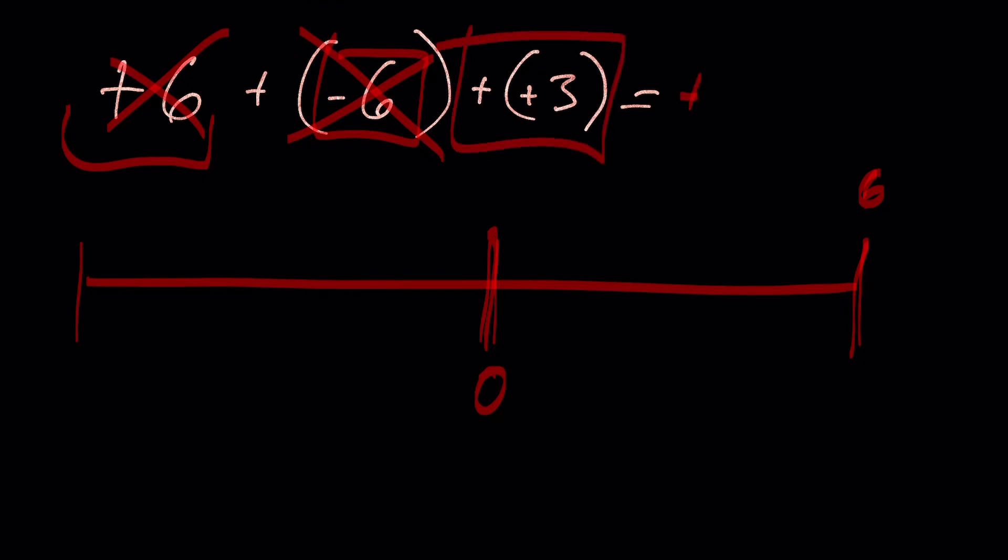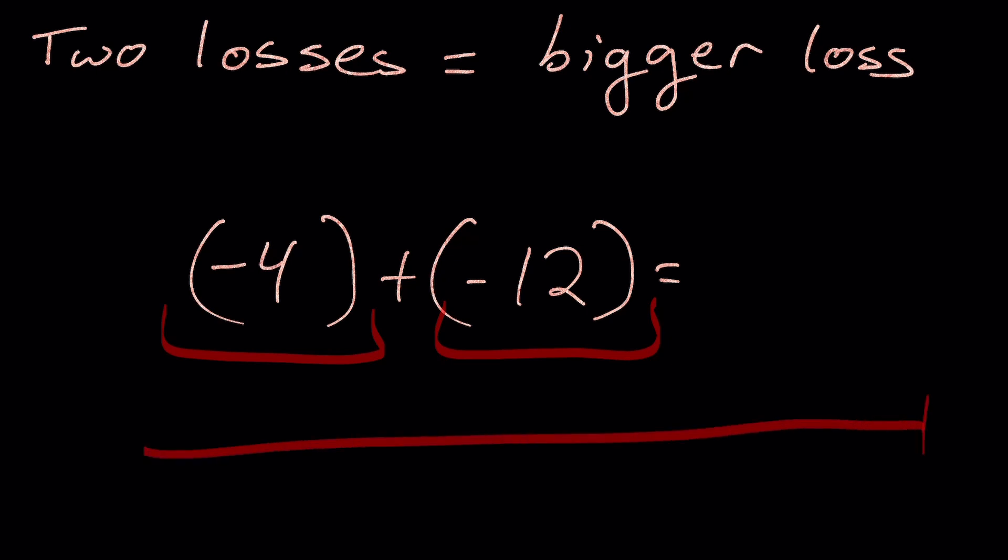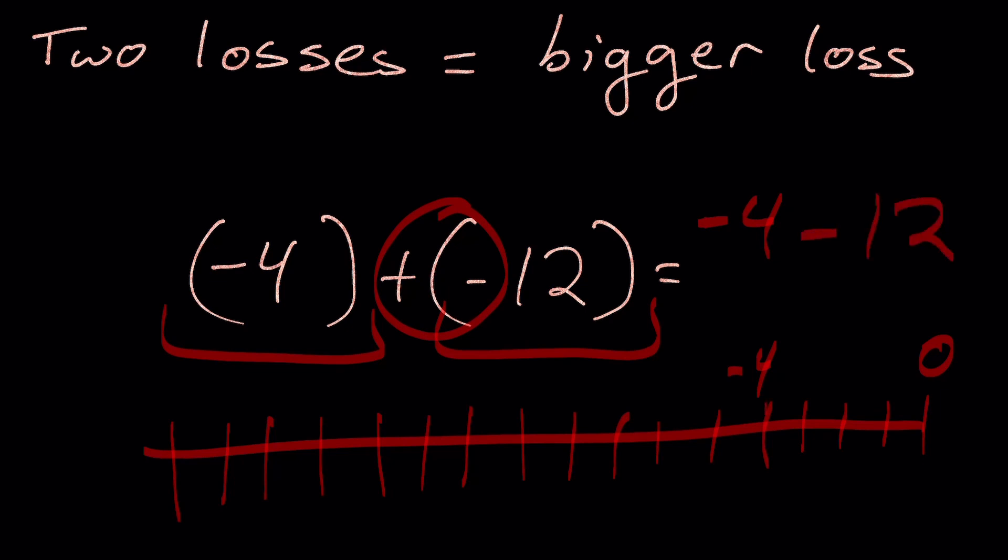Now if I have two losses, it's going to result in a bigger loss. So when I look at this on a number line, I have 0 here, there's 1, 2, 3, 4, here's negative 4. Negative 4 minus 12, because of the negative. And so I just count back those 12: 1, 2, 3, 4, 5, 6, 7, 8, 9, 10, 11, 12. So what happens here is I take these two negatives and I'm adding the two negatives together.